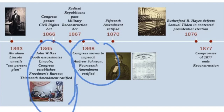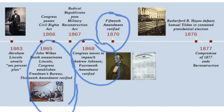In 1868, we have the 14th Amendment, protecting citizenship rights and making sure that due process is followed. Due process means you can't take away someone's right to life, liberty, and the pursuit of happiness without a fair trial. And in 1870, that's the 15th Amendment being ratified, protecting voter rights. These major pieces of legislation happened during Reconstruction and were reinforced by Northern troops in the South.